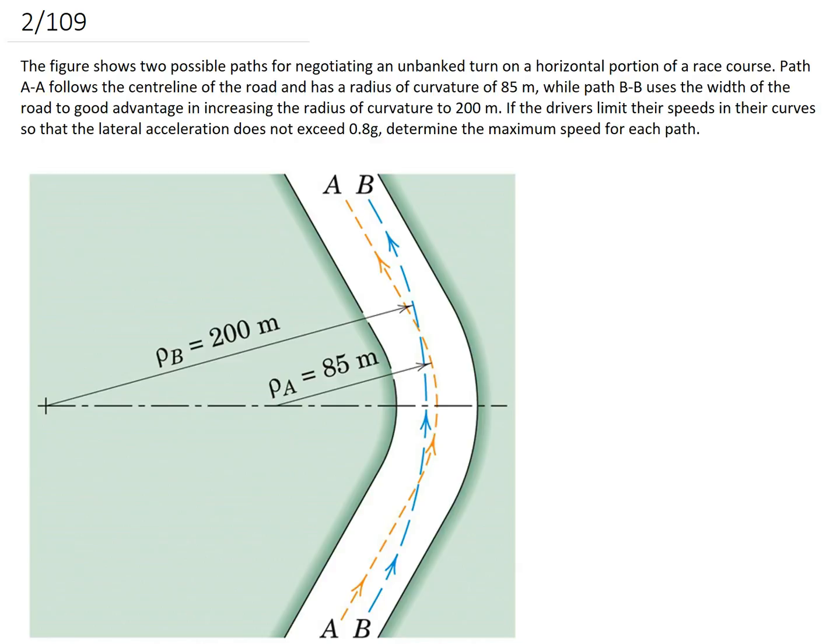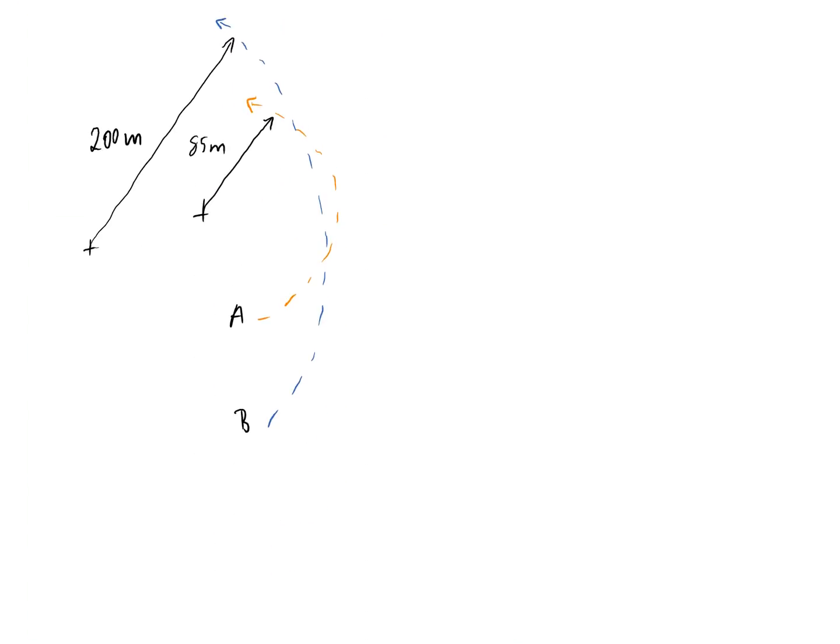I've redrawn this question with the main stuff on this diagram here. The main piece of information we were told is that we're trying to limit our acceleration—it said lateral, but that also means normal acceleration—to be 0.8 g's. So, let's write that down.